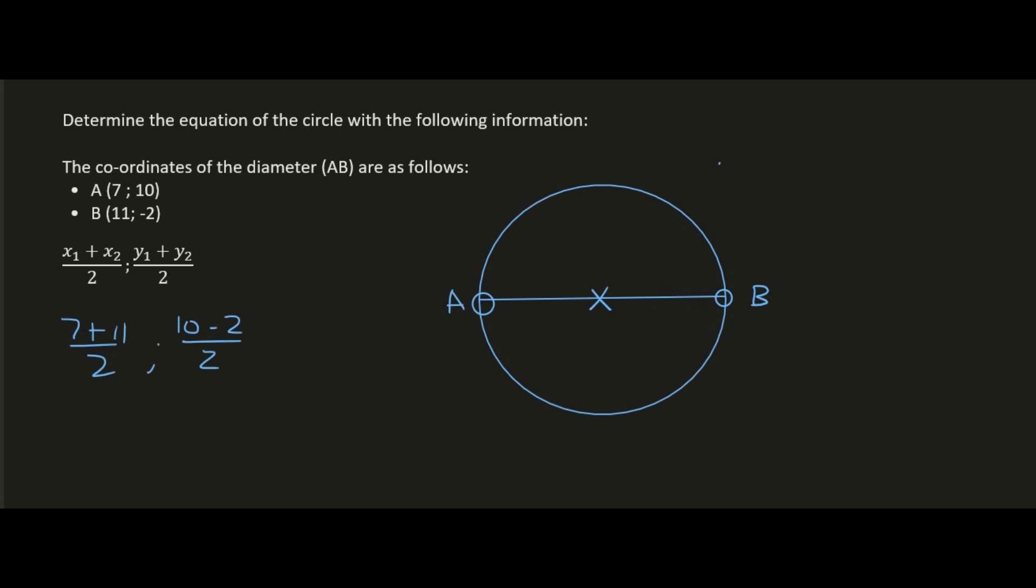So that is the center of the circle. In the circle formula we can already fill in the center point—the x value is 9 so we put a minus, and the y value is 4 so we put minus 4. All that we need now is the radius. The radius is this length over here.